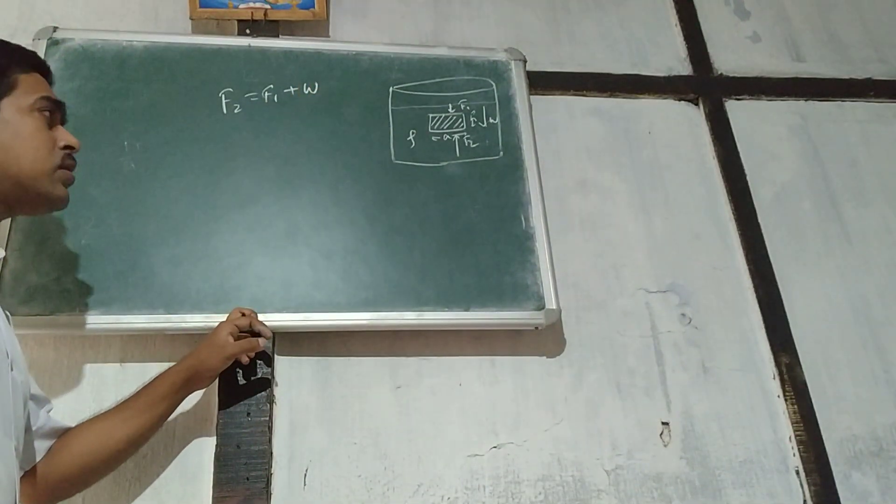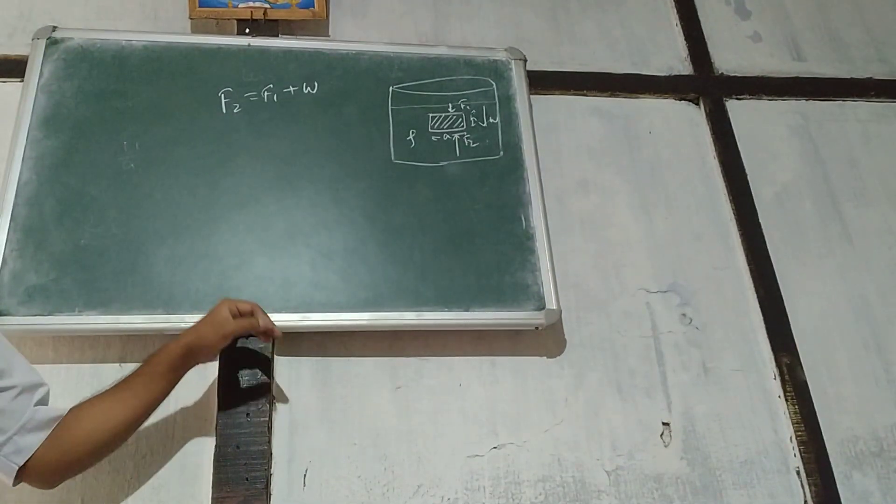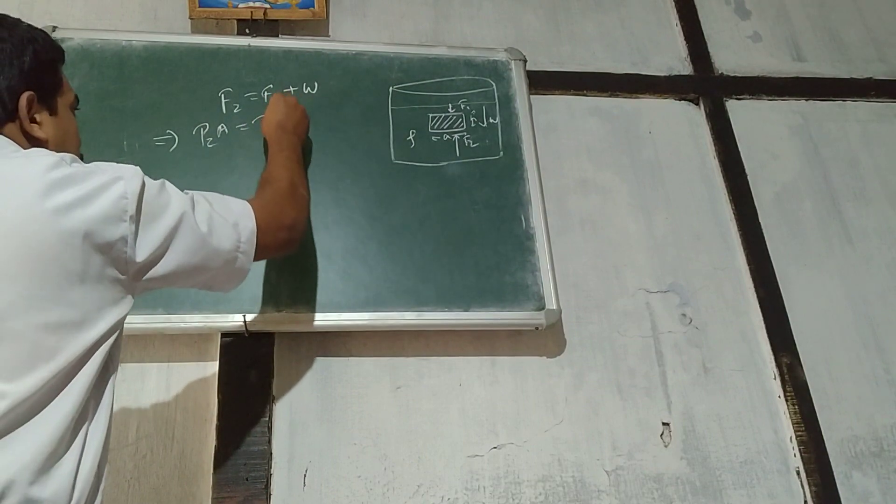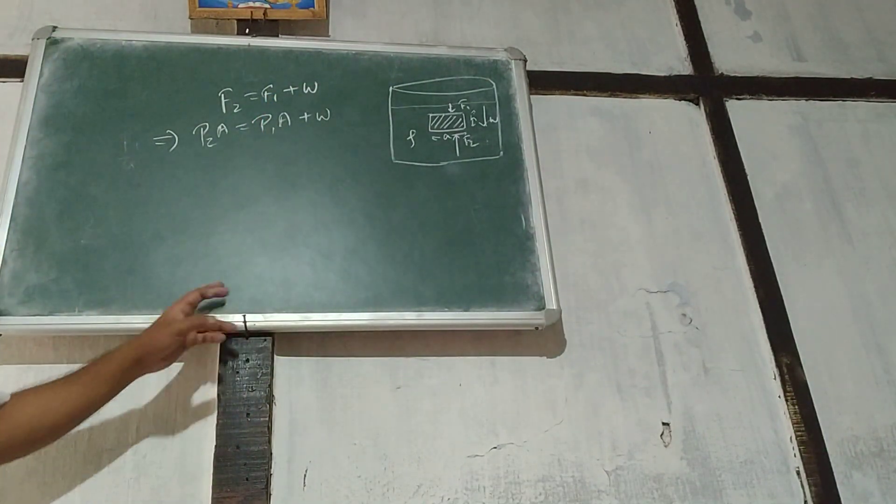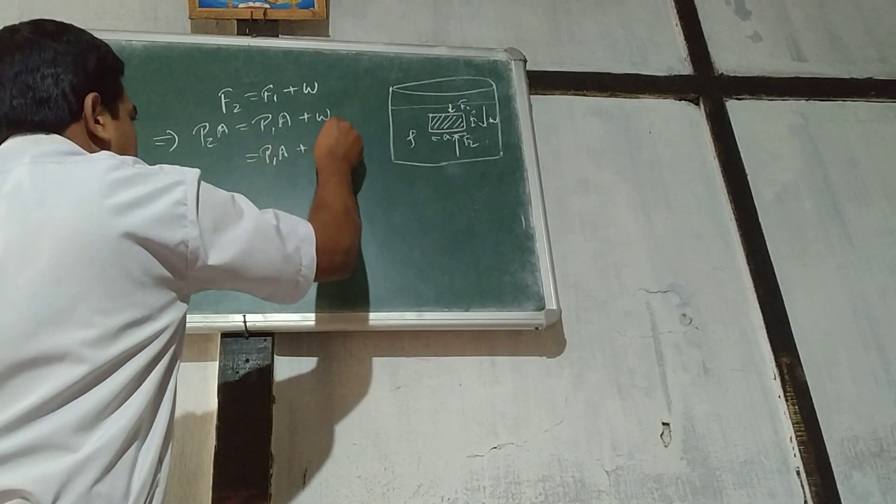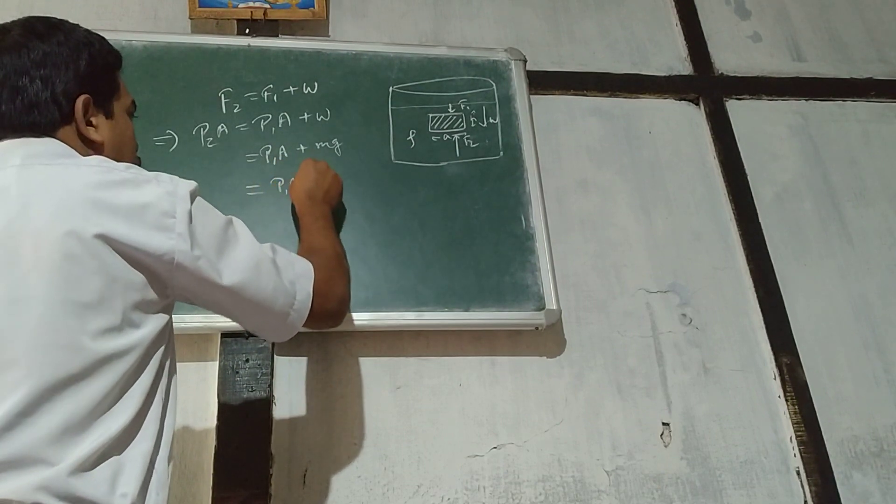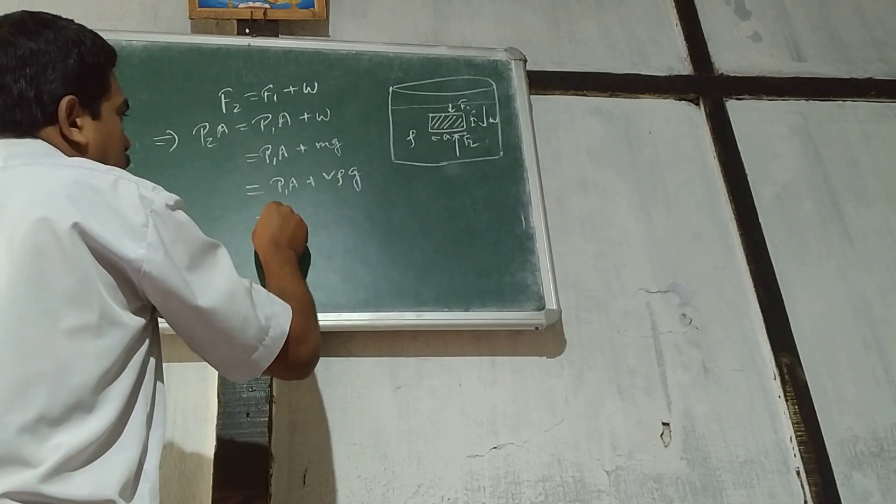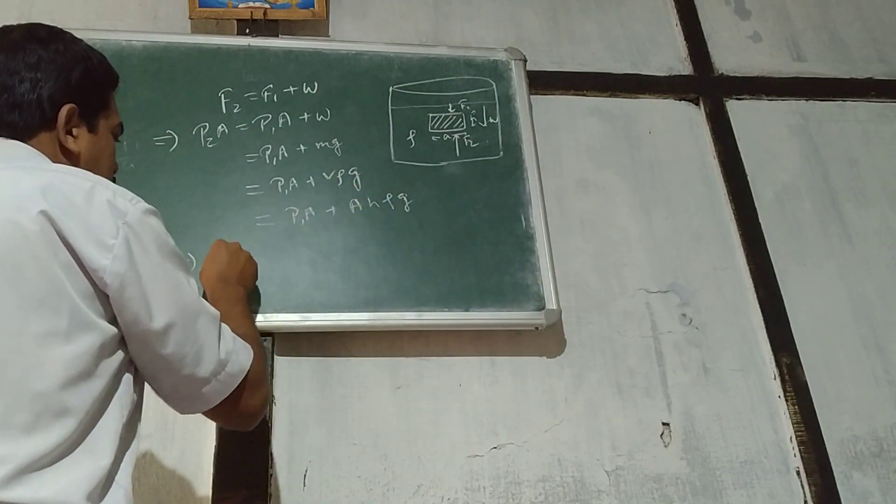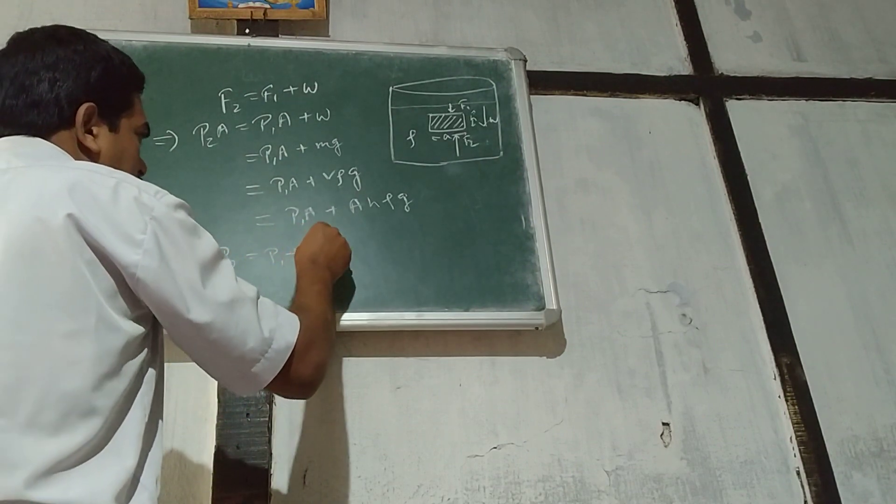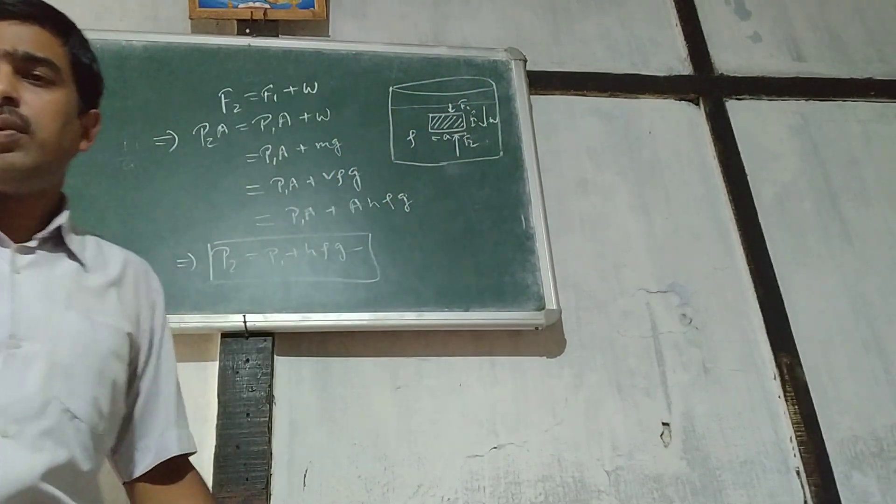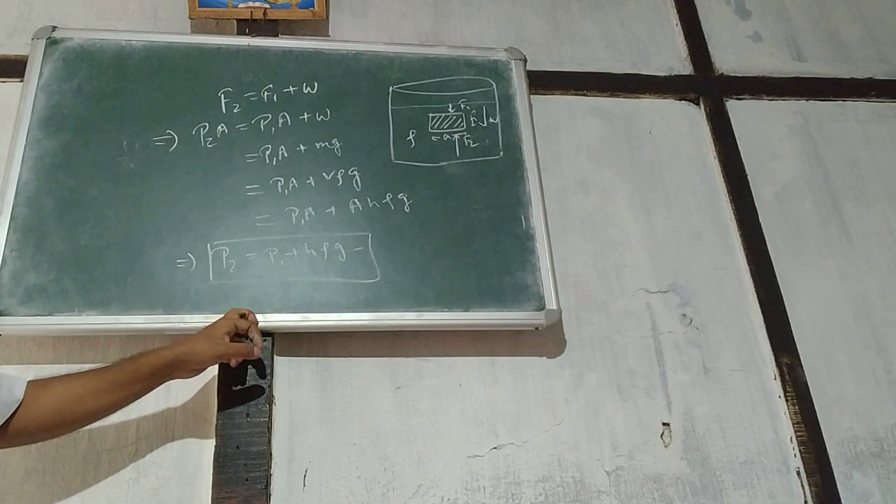Force in terms of pressure can be written as force equals pressure times area. So F2A equals P1A plus W. W means mass times g, which equals P1A plus mg. Mass means volume times rho times g, which is area times height times rho times g. So we can cancel A: P2 equals P1 plus H rho g. This H rho g is the extra pressure, so P2 equals P1 plus H rho g.